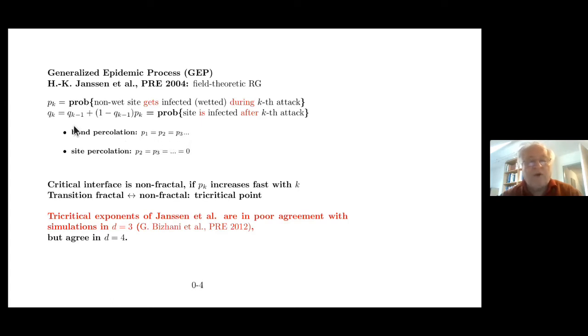Just to give you an example of what this means, bond percolation is the case where every attack has the same chance to succeed, so all these PKs are the same. Site percolation is P1 is different from zero, but all the others are zero. In this case here, the PK decrease with K. But if the PK increase sufficiently fast with K, then you can get a transition from fractal to non-fractal. And the transition, according to these people, is just a tricritical point. Now, back 10 years ago or so, we did rather extensive simulations of this. And to our frustration, the tricritical exponents for D equal three were very different from what Janssen had predicted, while they agreed in D equal four, and in D equal five it was more or less trivial that they agreed because that's the upper critical dimension already.